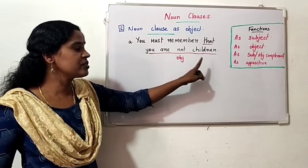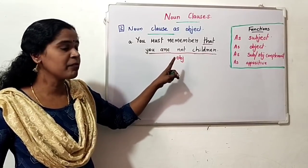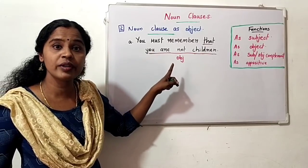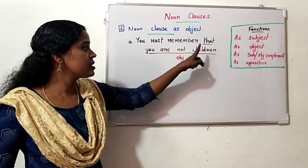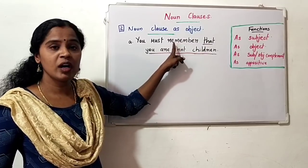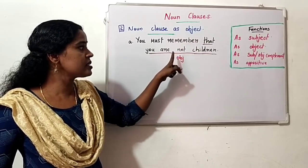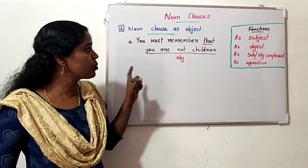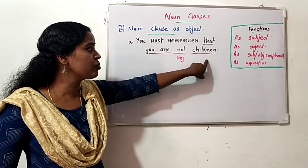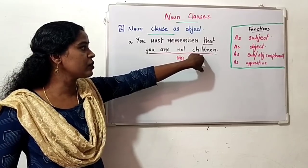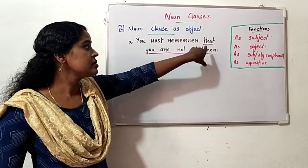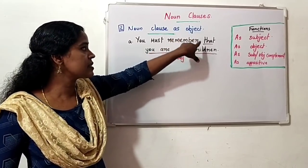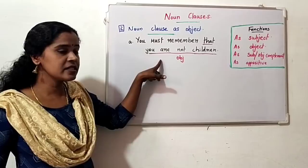'You must remember that you are not children.' The verb is 'must remember.' The noun clause is 'that you are not children' — this is the object of the whole sentence. So this is a noun clause acting as object, where 'you' is subject and 'are not children' is predicate.